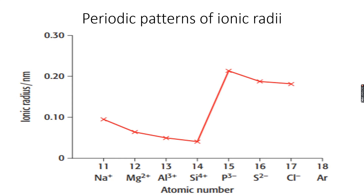Their ions have one more shell compared to the ions of sodium, magnesium, aluminium and silicon. So that's why their ionic radii have to be bigger than the ionic radii of sodium, magnesium, aluminium and silicon.